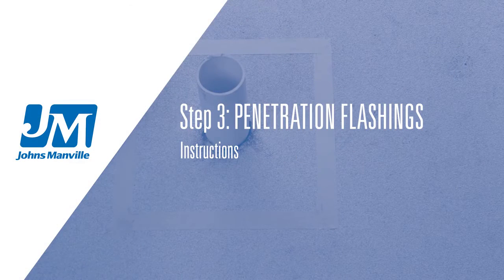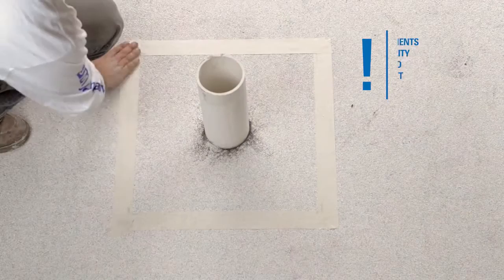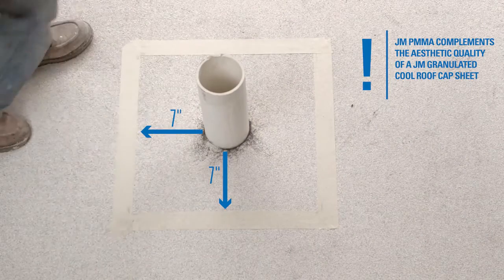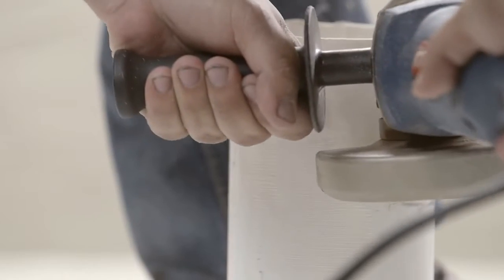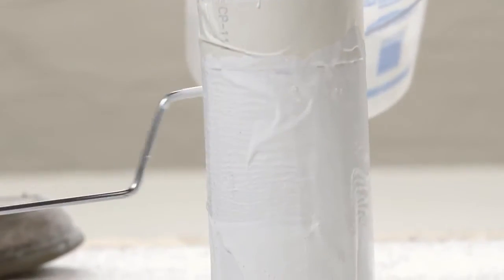After base flashings, the penetration flashings are installed. Mask out the area around the penetration on the field. Abrade, clean, and apply the appropriate primer to the surface.